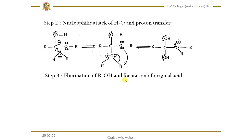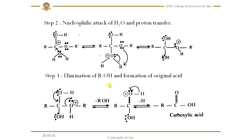In Step 3, elimination of ROH — that is, elimination of the alcohol — takes place and the original acid is reformed. The lone pair on the oxygen shifts to form a double bond, expelling the alcohol group. Since the resulting protonated carboxylic acid is unstable, the proton is removed, the lone pair returns to the oxygen, and we get the carboxylic acid.